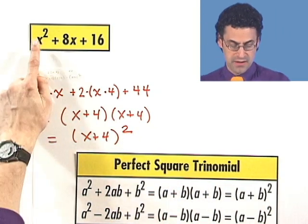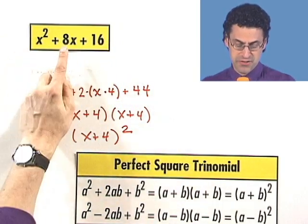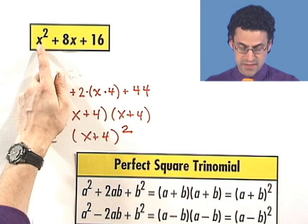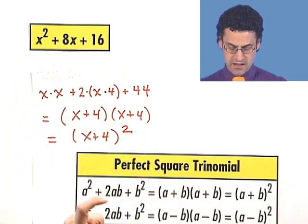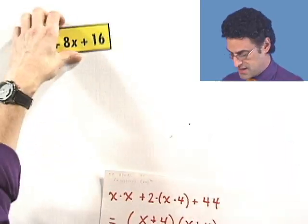So when you see something squared, something squared, two perfect squares, and in between it's 2 times the x times the 4, the numbers themselves product, then you know you've got a perfect square.